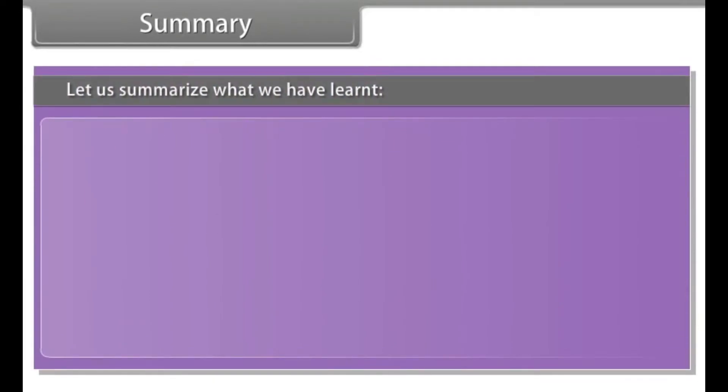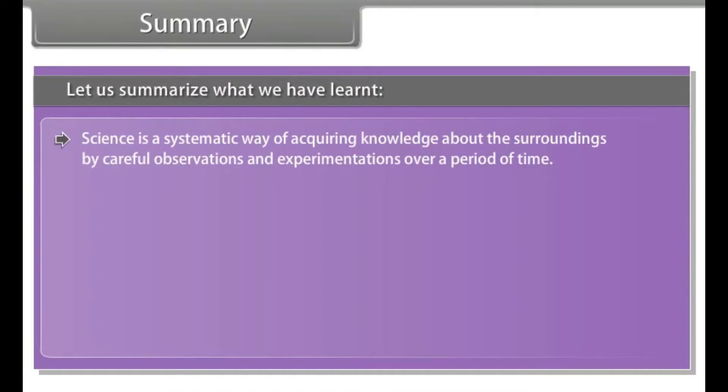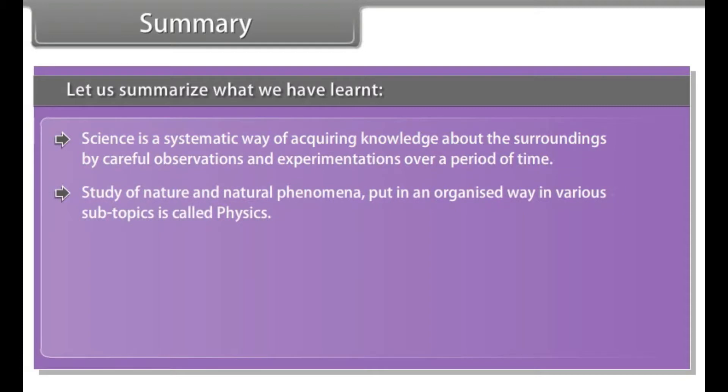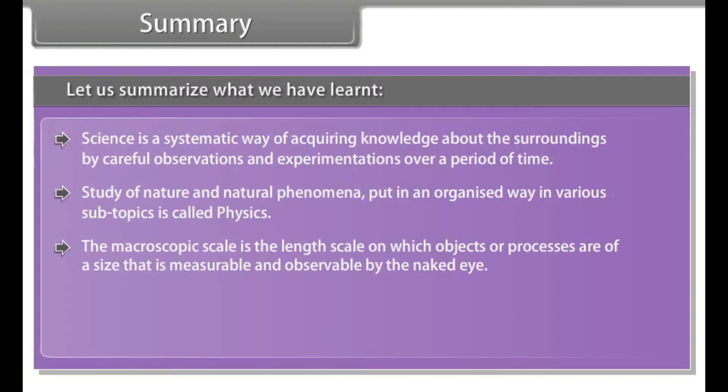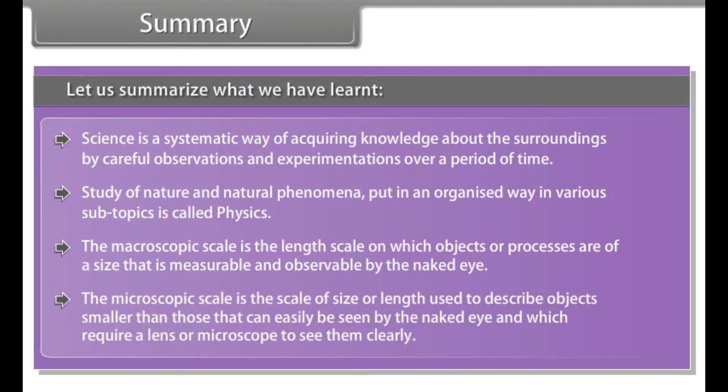Summary. Let us summarize what we have learnt. Science is a systematic way of acquiring knowledge about the surroundings by careful observations and experimentations over a period of time. Study of nature and natural phenomena put in an organized way in various subtopics is called physics. The macroscopic scale is the length scale on which objects or processes are of a size that is measurable and observable by the naked eye. The microscopic scale is the scale of size or length used to describe objects smaller than those that can easily be seen by the naked eye and which require a lens or microscope to see them clearly.